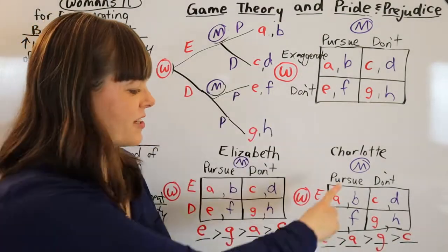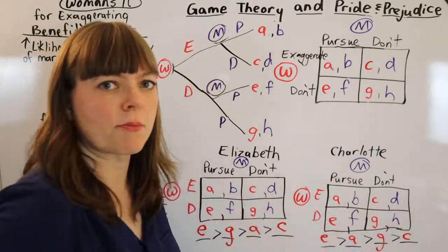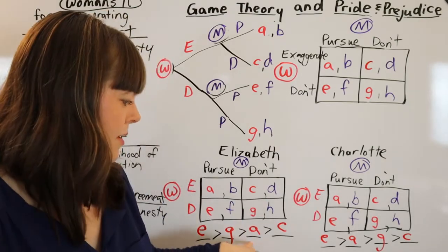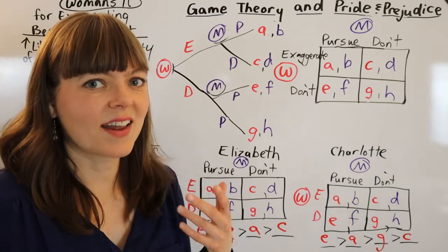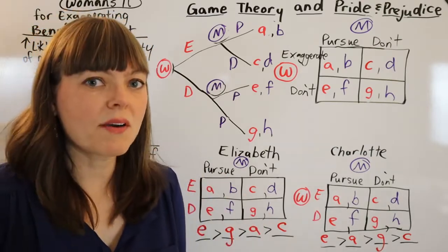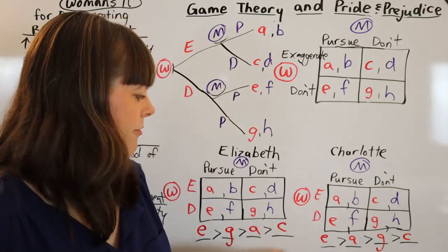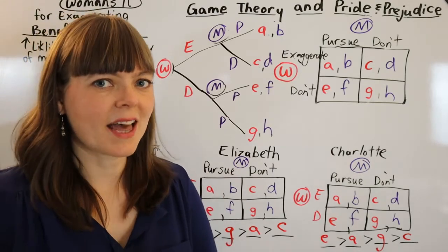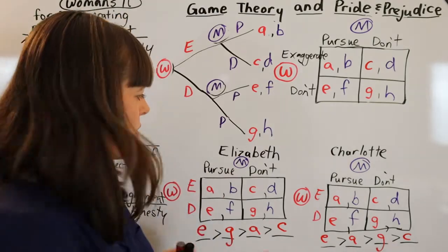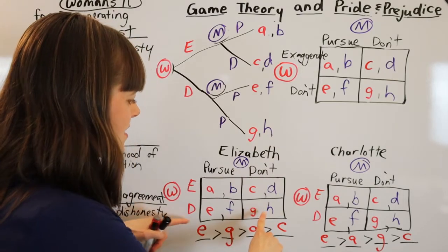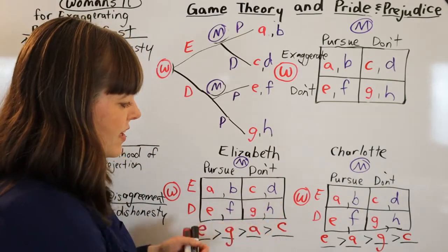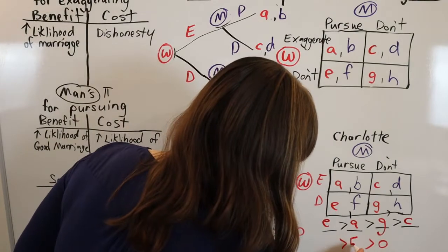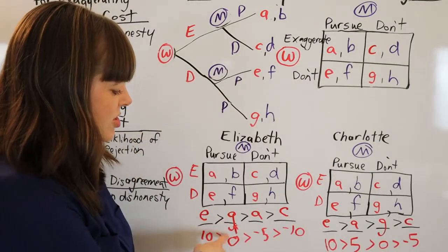But you could probably argue that Charlotte has the same favorite box and the same least favorite box as Elizabeth. Now this is really all you need. You can come up with any set of numbers that meets this inequality, and the game theory is going to work out. However, you'll make this more intuitive if you figure out which of these four payoffs is closest to the status quo and let that be zero. So the status quo is basically not being pursued and not exaggerating. The G-H box really is most like zero.